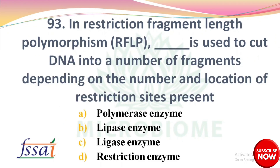In Restriction Fragment Length Polymorphism (RFLP), DASH is used to cut the DNA into a number of fragments depending on the number and location of restriction sites present. Options: A) Polymerase enzyme, B) Lipase enzyme, C) Ligase enzyme, D) Restriction enzyme. The right answer is option D: Restriction enzyme.